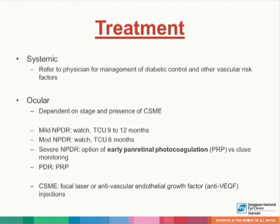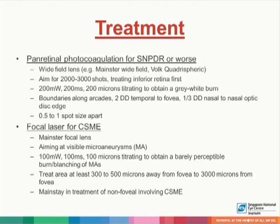In patients with CSME, options include focal laser or anti-vascular endothelial growth factor, otherwise known as anti-VEGF injections. We perform panretinal photocoagulation for severe NPDR or worse, using wide field lens such as a Mainster or Volk, aiming for 2,000 to 3,000 shots, treating the inferior retina first. Settings are 200 microns, 200 milliwatts, 200 milliseconds, titrating to obtain a gray-white burn. Boundaries are along the arcades, 2 disc diameters temporal to the fovea, and one-third disc diameter nasal to the nasal optic disc edge, spaced 0.5 to 1 spot size apart.